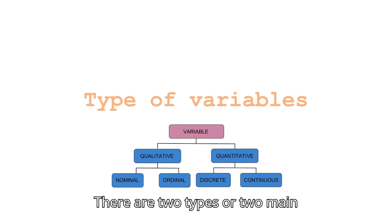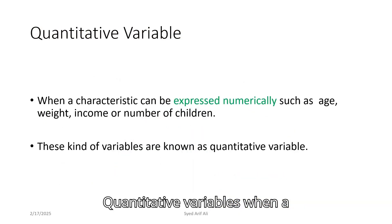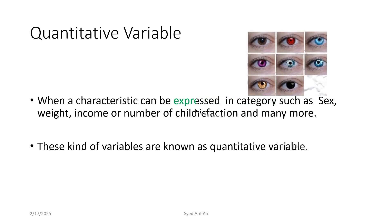There are two main types of variables: quantitative variables and qualitative variables. Quantitative variables are when a characteristic can be expressed numerically, such as age, weight, income, or number of children. These kinds of variables are known as quantitative types of variables.